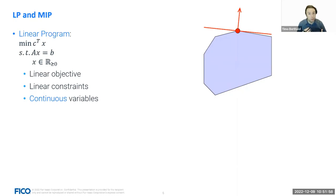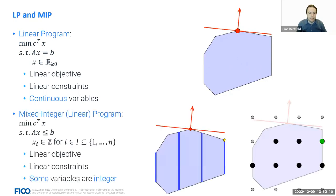Mixed integer programming also optimizes a linear function over a set of linear constraints, but now some or even all of the variables can take integer values. This is a much harder problem because now the feasible set is not even connected anymore. If you have one integer and one continuous variable, your set of feasible solutions are those dark blue lines shown. If both variables need to be integer, the feasible set reduces to seven individual points. What allows you to powerfully solve MIPs with solvers like Express is the fact that you can at least solve the so-called relaxation efficiently.